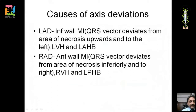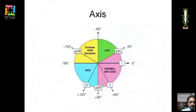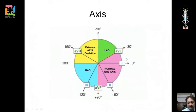Right axis deviation occurs in anterior wall MI, where the QRS vector deviates inferiorly and to the right, away from the necrotic area. It also occurs in right ventricular hypertrophy and left posterior hemiblock. In inferior infarction, the axis moves away from the inferior surface toward the left, producing left axis deviation. In anterior infarction, the axis moves rightward.